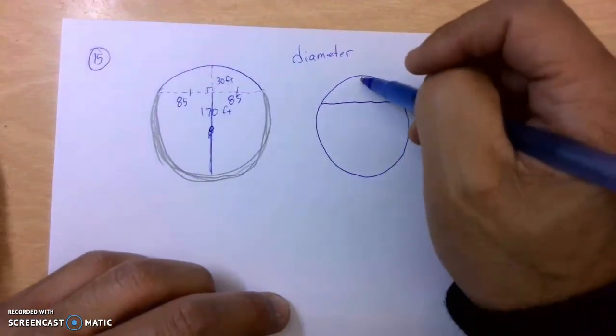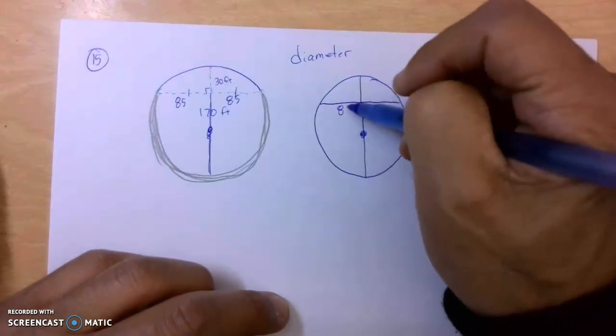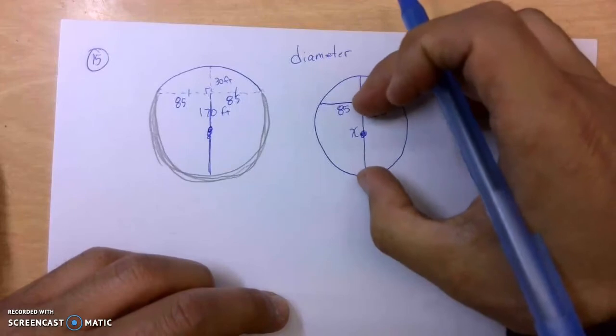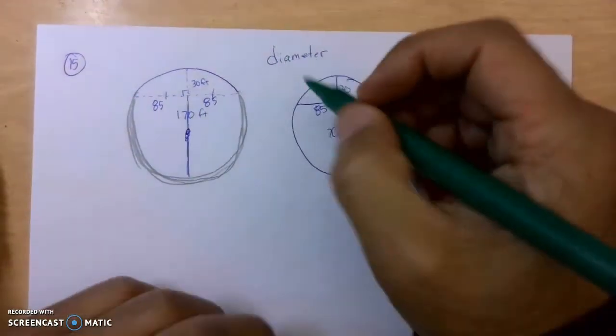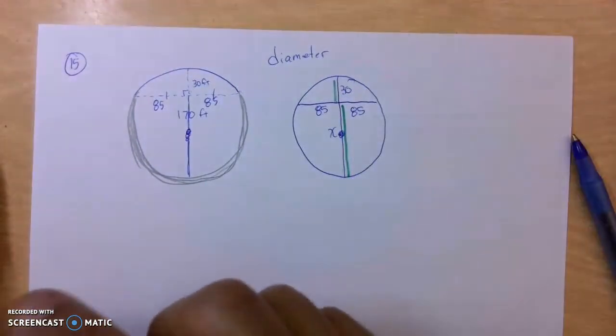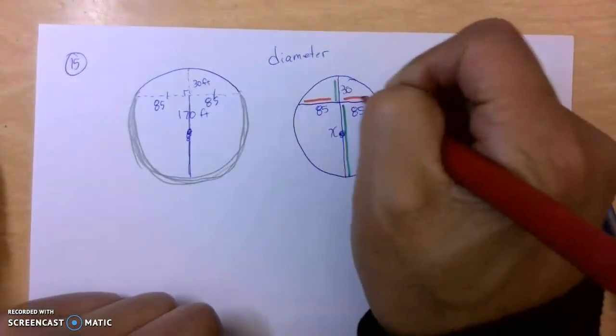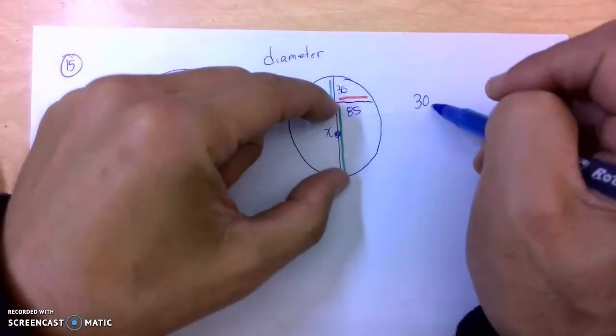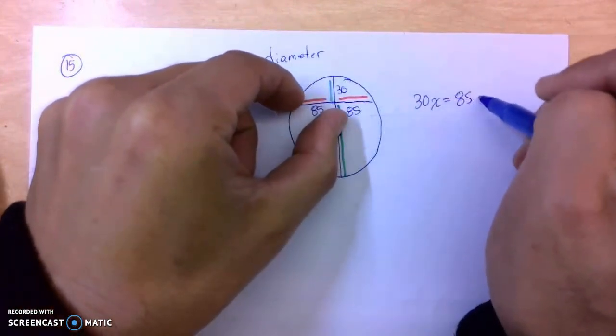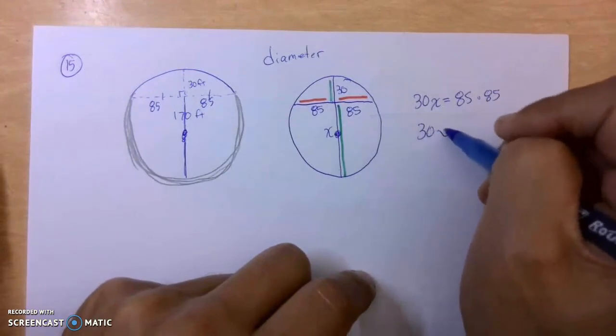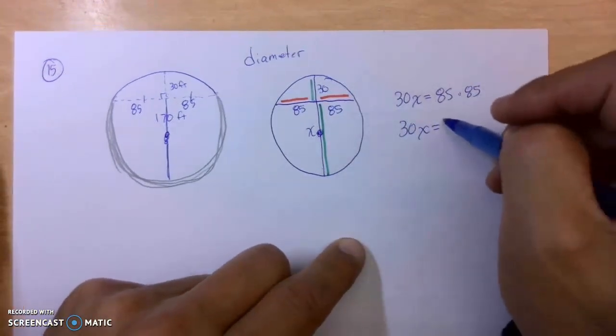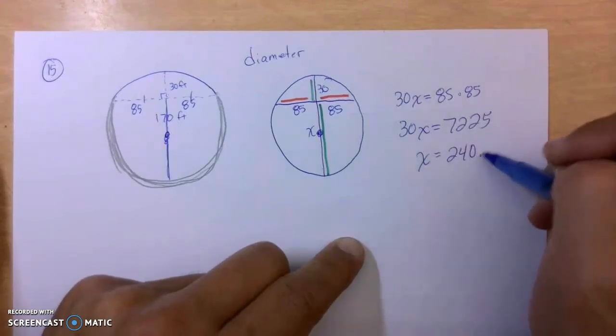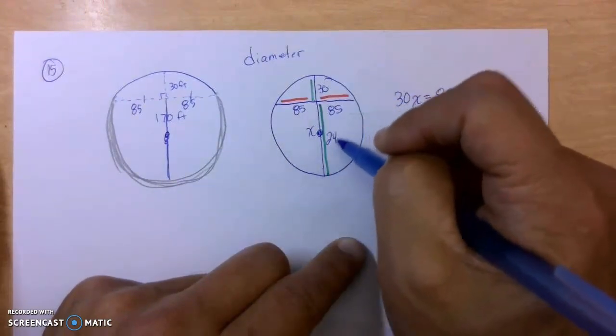it's kind of like this. This is 85, 85. This is 30. And then here to here will be X. And so when we do this, we'll just say green times green is equal to red times red. And then we will solve for X. And then we will figure out the diameter. So this is green times green. Red, 85 times red, 85. That's your basic setup. 85 times 85 is 7,225. Divide by 30. You get 240.8. So this is 240.8.